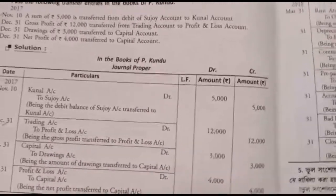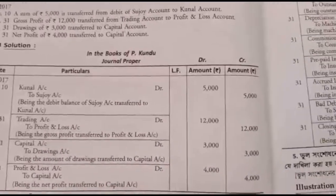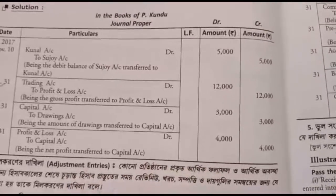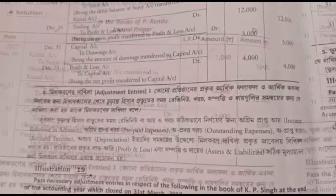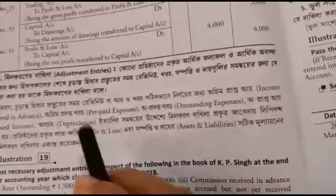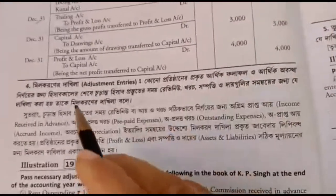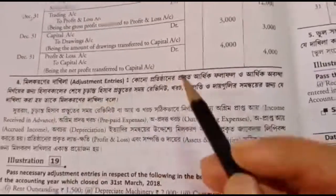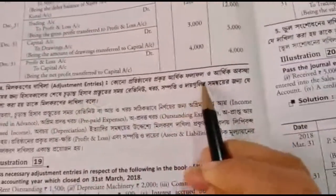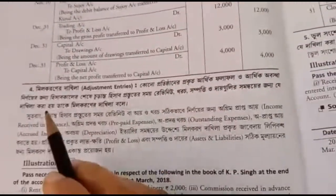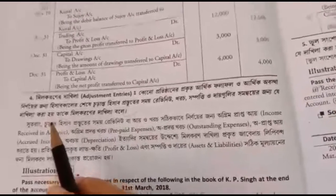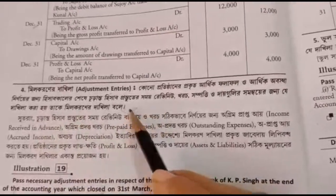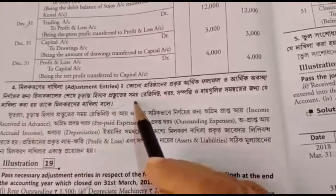This is the adjustment and rectification entries. The adjustment entries are very important. They are important to be aware of the financial results and position. You can realize the original results — it is important to ensure the final accounts of the business are correct.